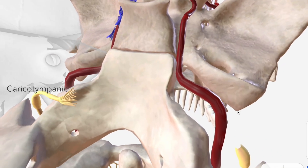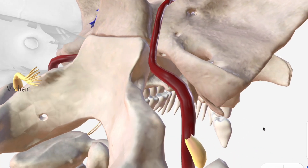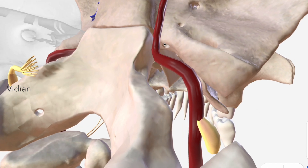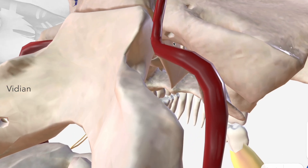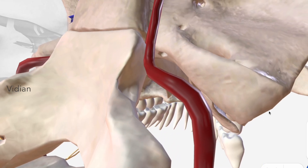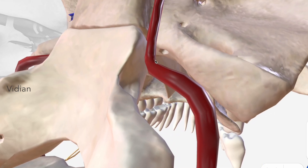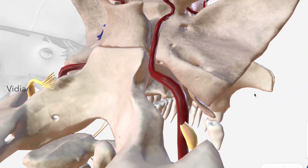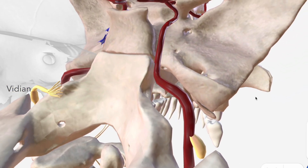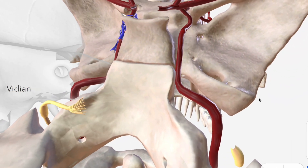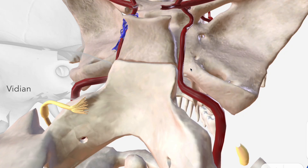The second branch from C2 is the vidian artery, which passes through a little channel in the sphenoid bone called the vidian canal. It anastomoses with the external carotid artery to form a sort of redundant passage of arterial blood in case one of the two gets blocked.